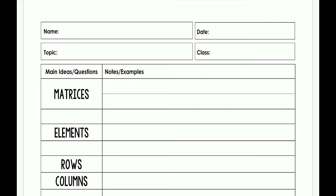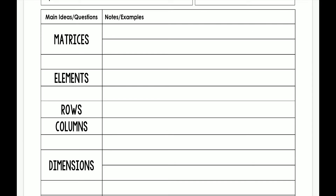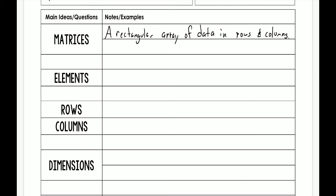To begin, we're going to talk about matrices. A matrix can be defined as a rectangular array of data in rows and columns. The data is arranged in rows and columns, and if you look at a specific number inside the array — inside the matrix — we call them the elements. The elements are the individual numbers in the matrix. Note: matrices is the plural of matrix.